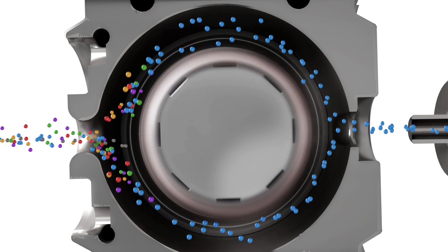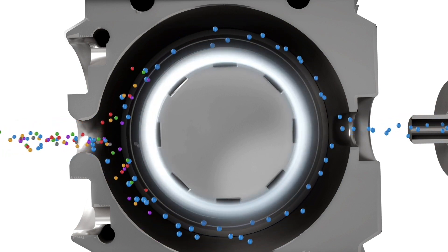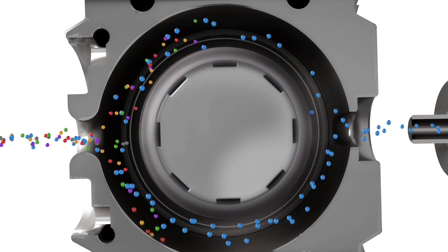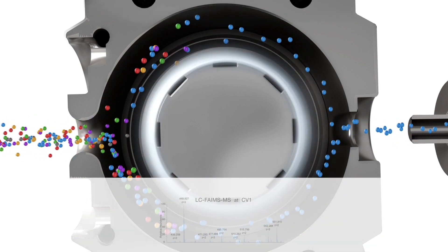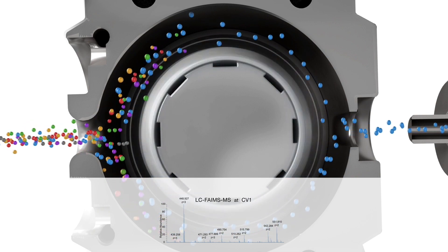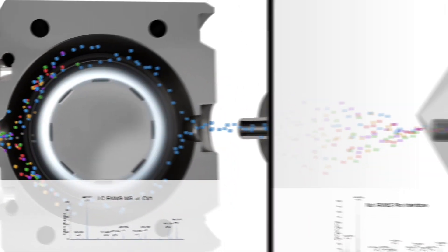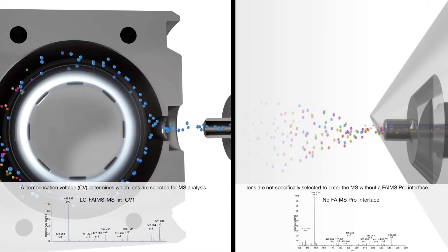To select which ion groups traverse the interface for MS analysis, a secondary DC potential, the compensation voltage or CV, is applied to the inner electrode to compensate for the displacement that changes the resulting full scan MS as compared to experiments performed without FAIMS.